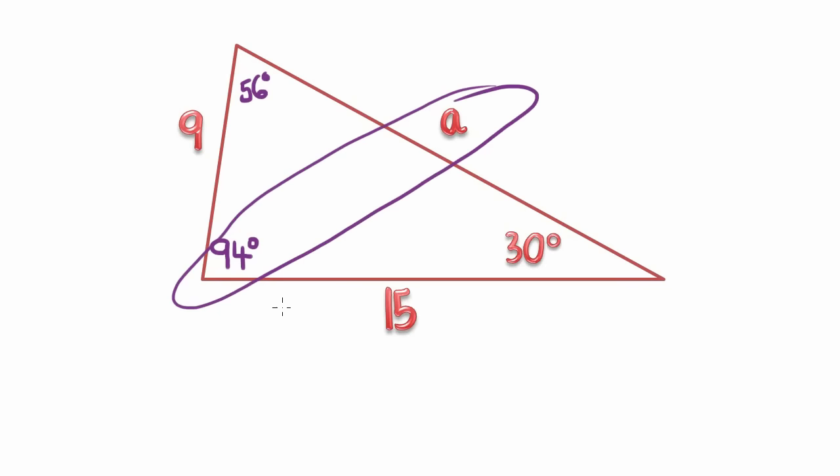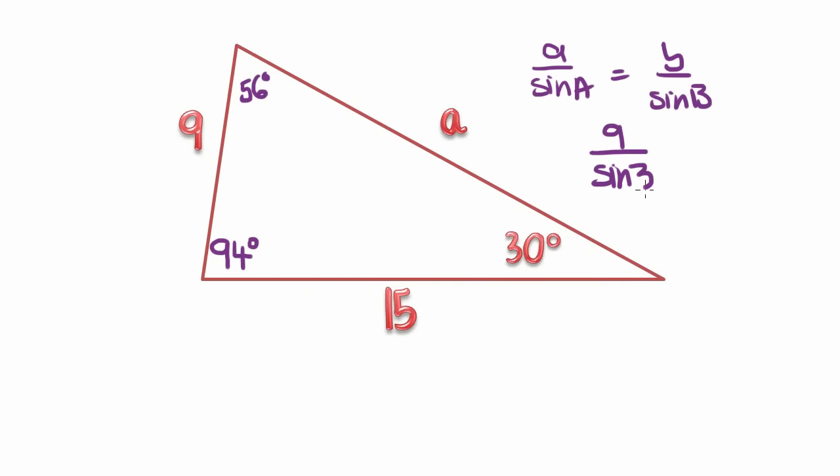Now I have a matching set with my mystery unknown. A, I have its corresponding angle. So I can use 56 and 15, or I can use 9 and 30 as my other matching set. Let's just use 9 and 30 for now. 9 over sine of 30 is equal to a over the sine of 94. I can just times that sine 94 over to the other side to get rid of it, and I have 9 over sine of 30 times sine of 94 will give me a, which is 17.9. So rounding up, I get 18.